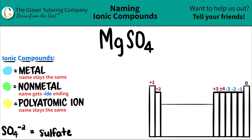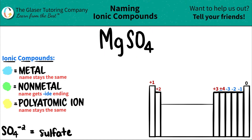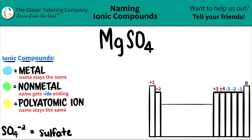Today we are going to be naming the ionic compound MgSO4. Here's a little trick: if you have a compound that has three or more different elements in it, you know that you're dealing with at least one polyatomic ion.